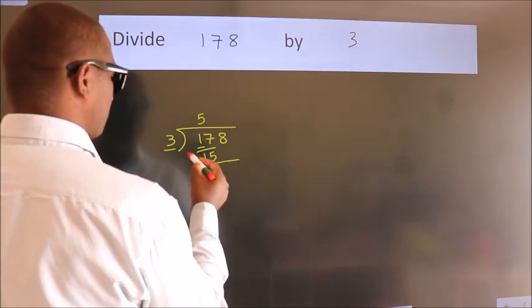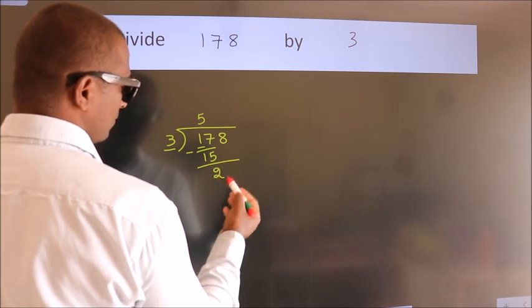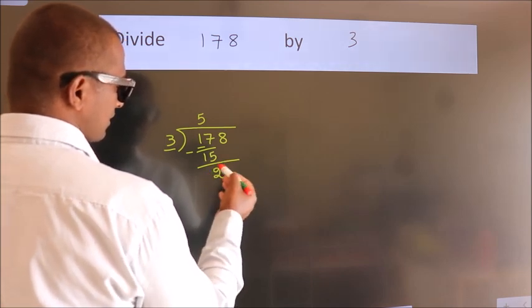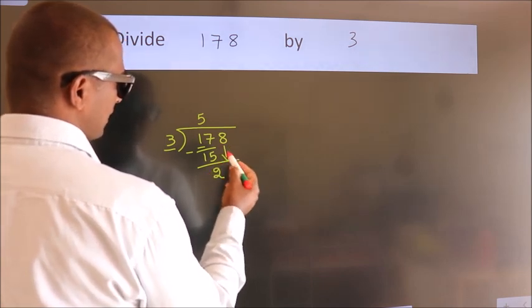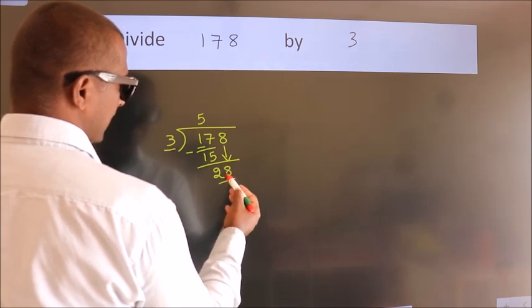Now we should subtract. We get 2. After this, bring down the beside number. So 8 down, 28.